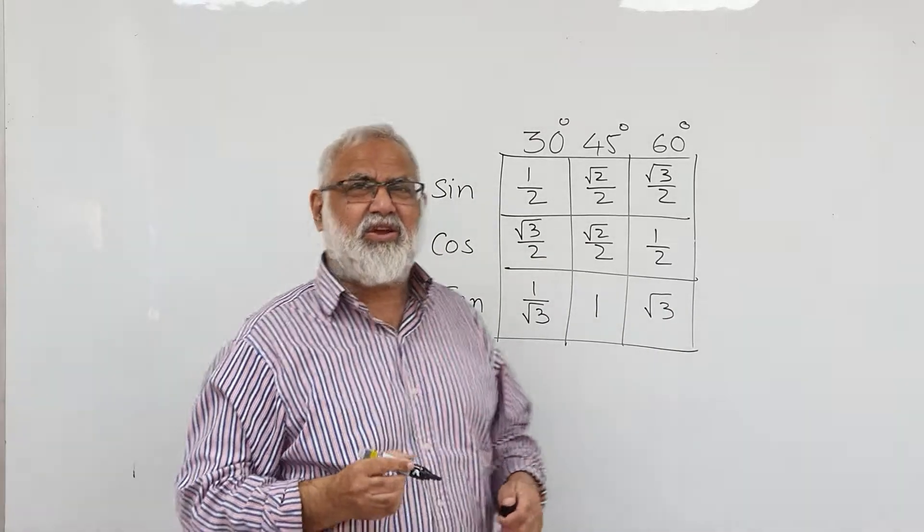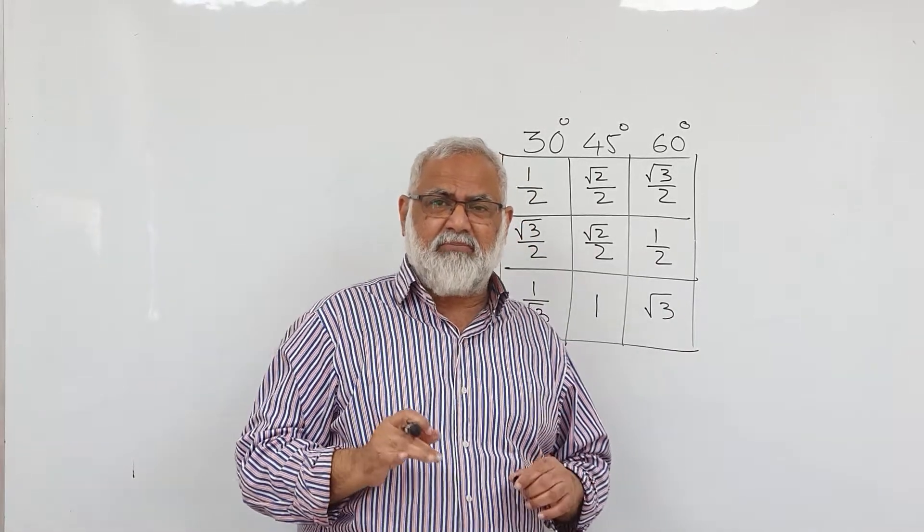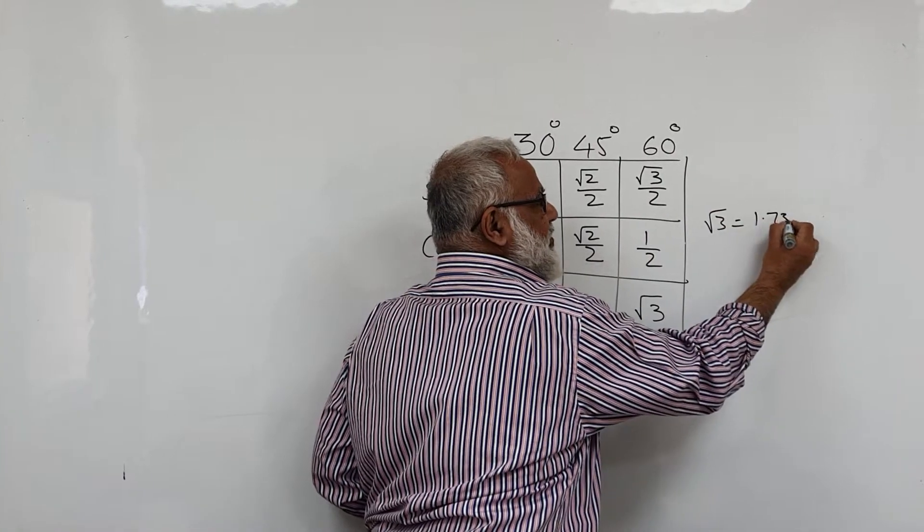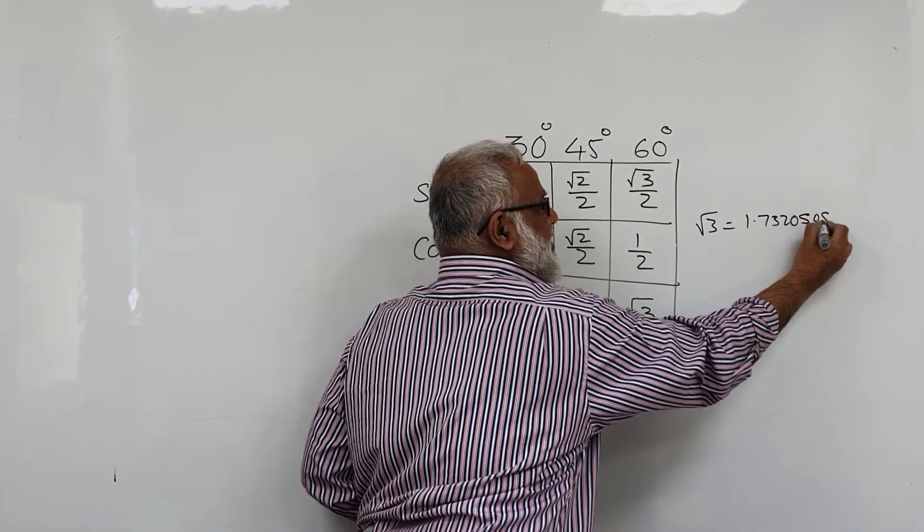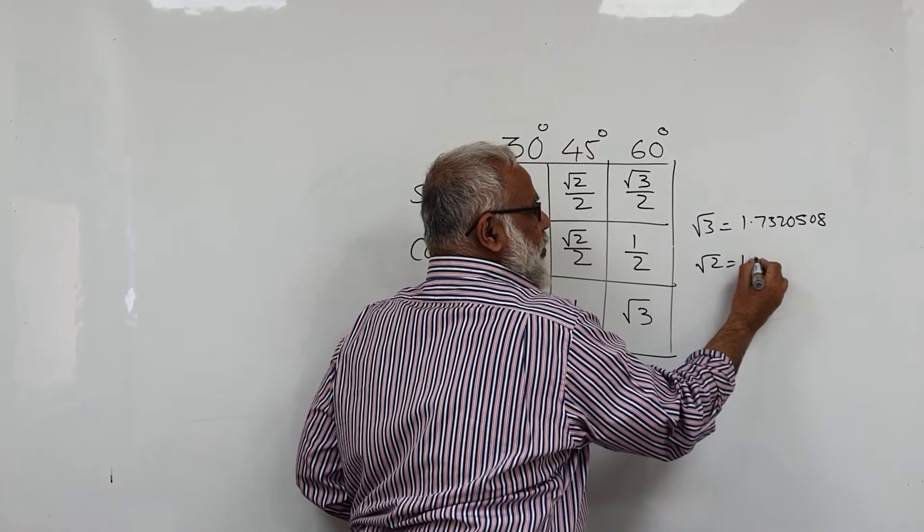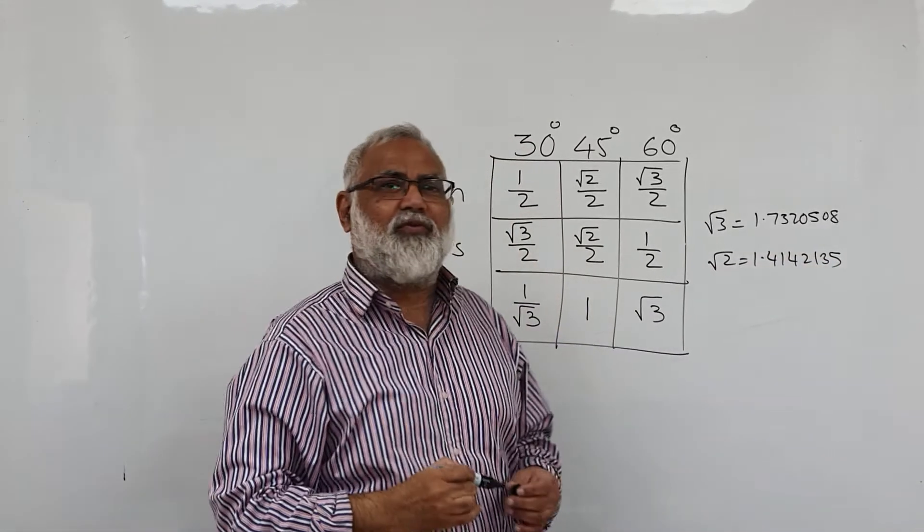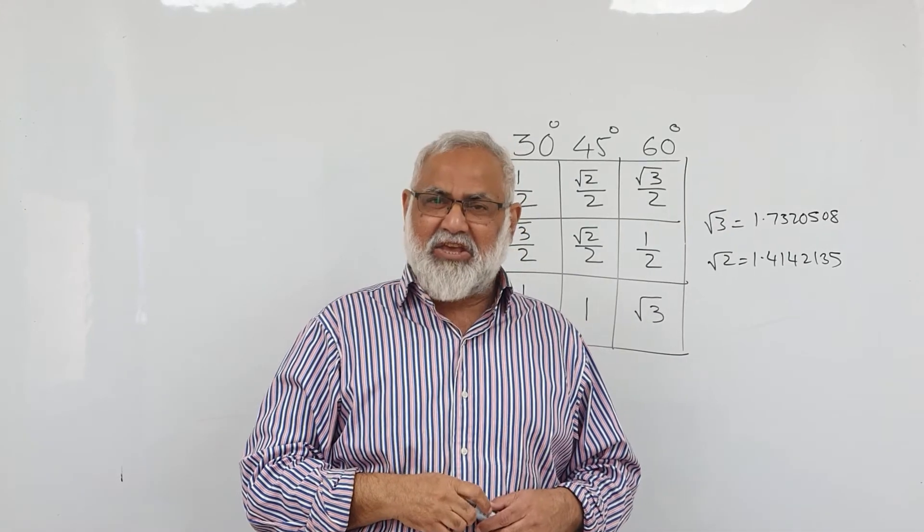If you write down this three or four times, you can remember. You can also remember that root 3 is 1.7320508, and root 2 is 1.4142135. So hopefully you will remember. Thank you very much.